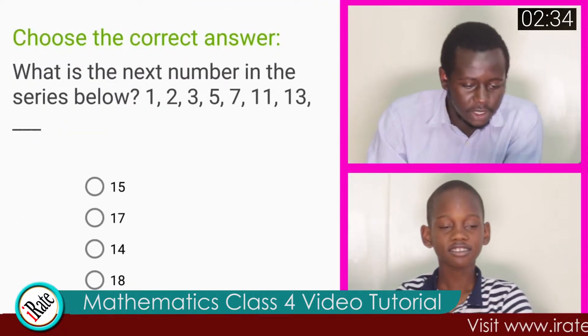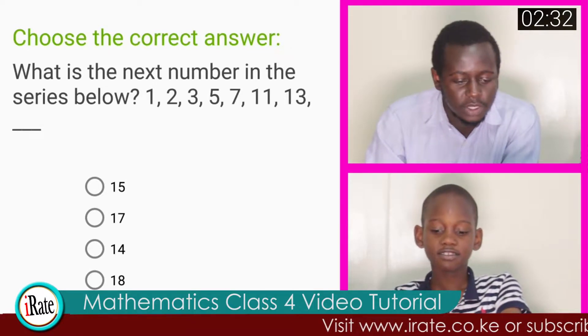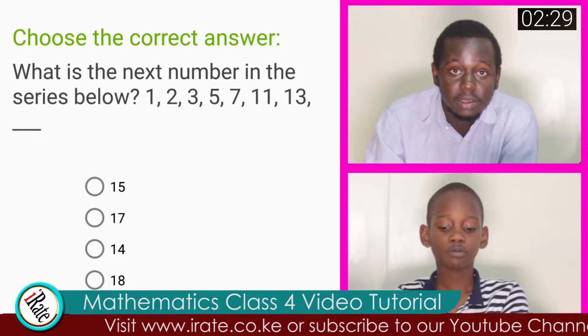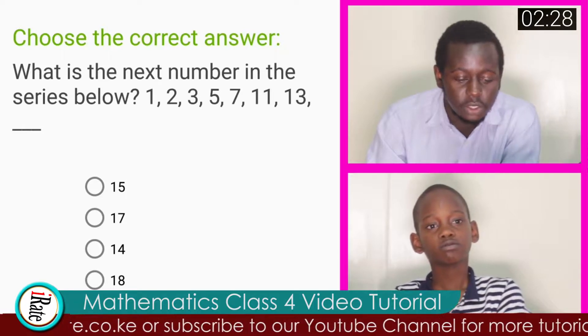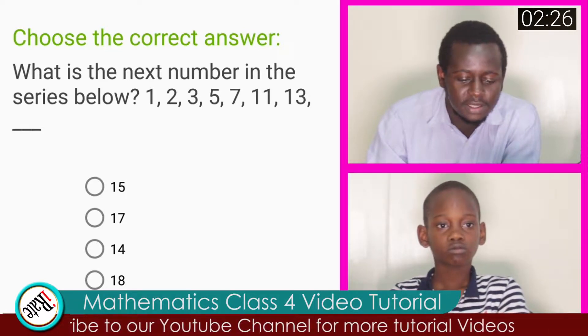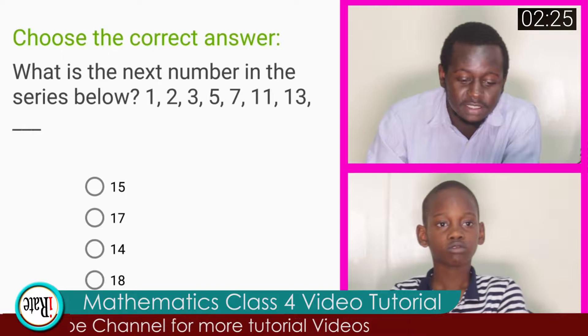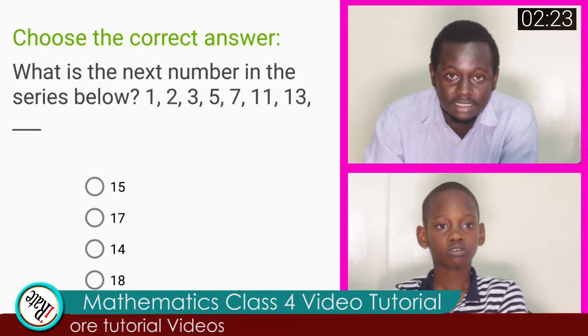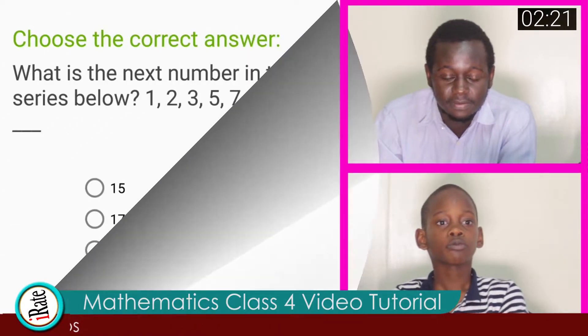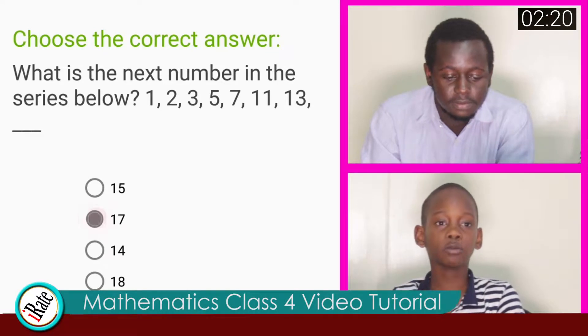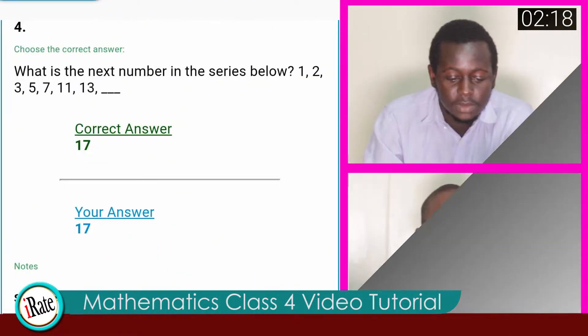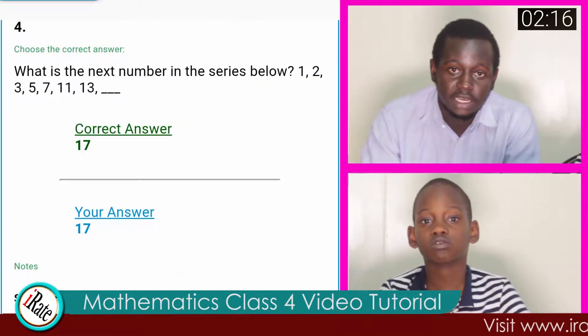Question number four. Choose the correct answer. What is the number in the series below? One, two, three, five, seven, eleven, thirteen, dash. The answer to question number four is seventeen. For more information, you can study on sequences.